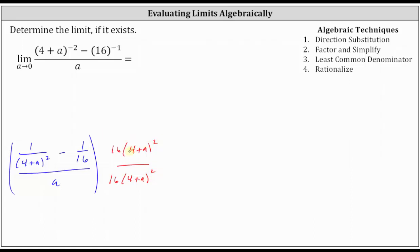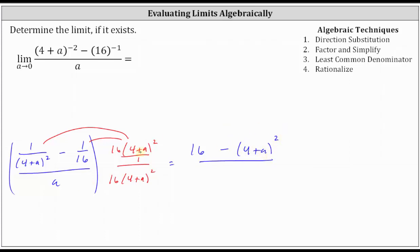Now we'll multiply the top. If helpful, we can think of 16 times the square of four plus a as a fraction with a denominator of one. For the first product, notice how the square of four plus a will simplify out, leaving us with just one times 16, which is 16. And then for the second product, notice how the 16s will simplify out, leaving us with just minus the square of four plus a. All of this is over the product on the bottom, which we write as 16a times the square of four plus a.